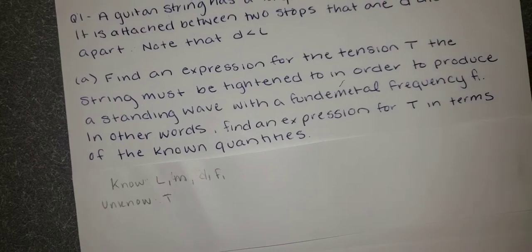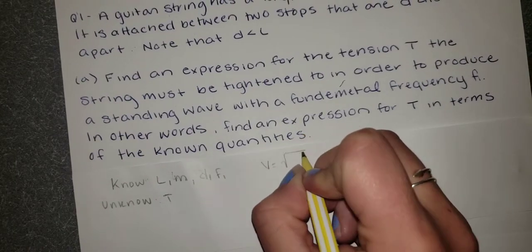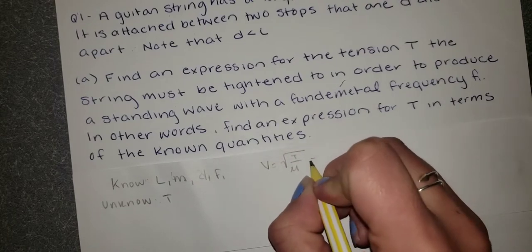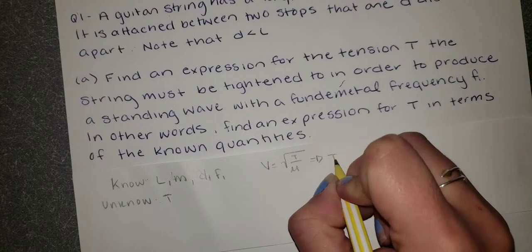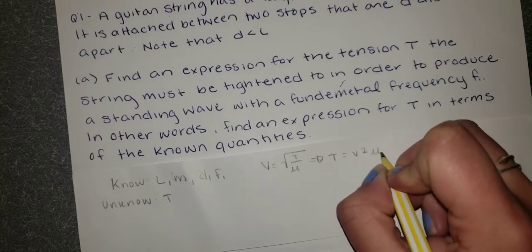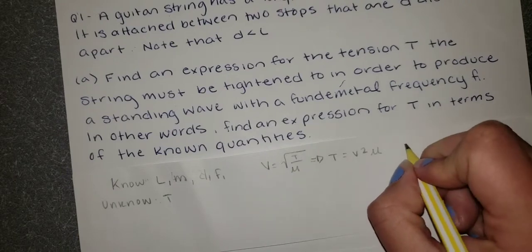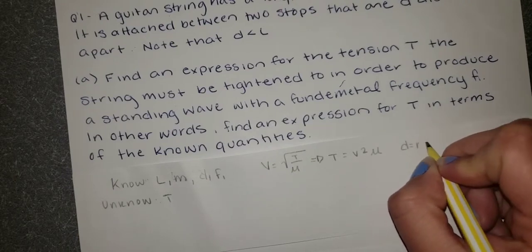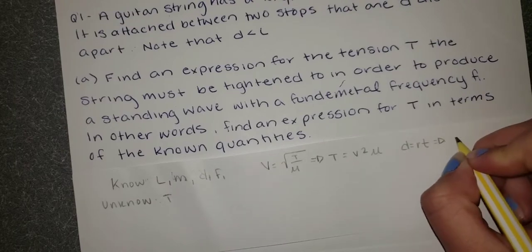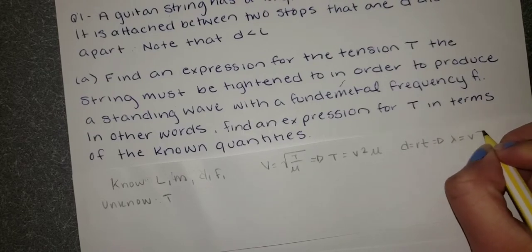So let's write down the equations that we know. We know that velocity is equal to the square root of tension divided by linear density. So if we write that another way, we'll find that tension is equal to velocity squared times linear density. We also know from class that d equals rate times time, which if written another way, we can say that wavelength is equal to velocity times the period.